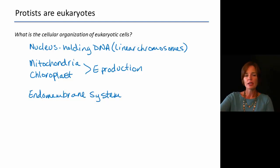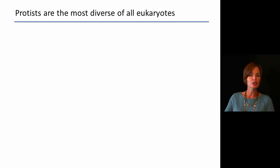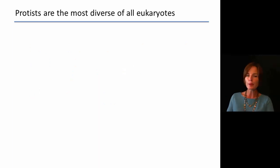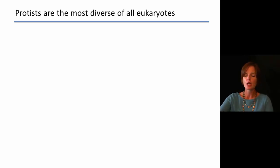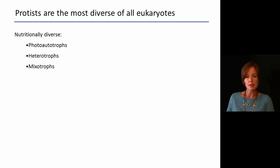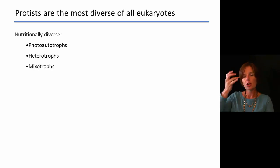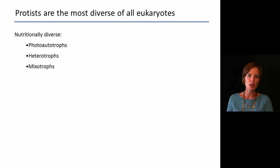So why do we group all of these together and call them protists? Well, protist is a generic category where we put a lot of different eukaryotes that we can't specifically classify as plants, animals, or fungi. It's important to understand that protists are going to be very nutritionally diverse — pretty much anything goes here.